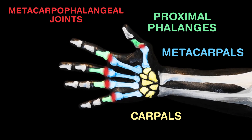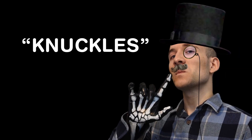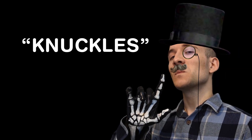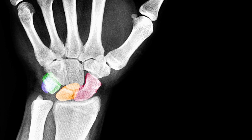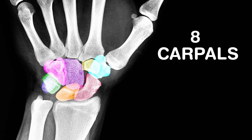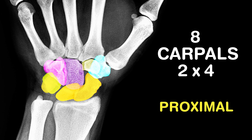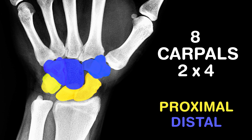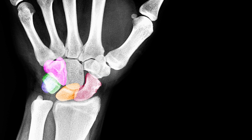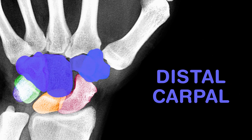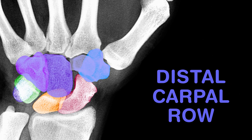Between metacarpals and phalanges, that's where you'll find metacarpophalangeal joints — or knuckles for the unrefined. And now for the eight carpals in two lines of four; again the proximal are close, distal distant from the core.